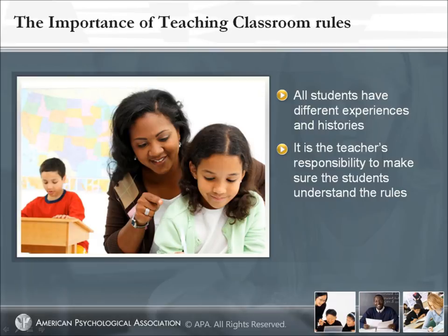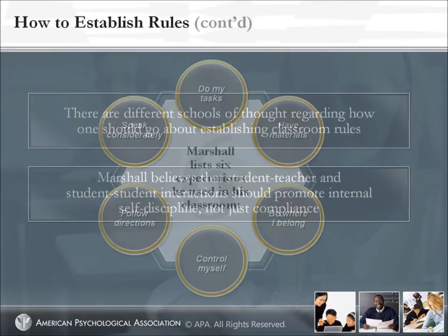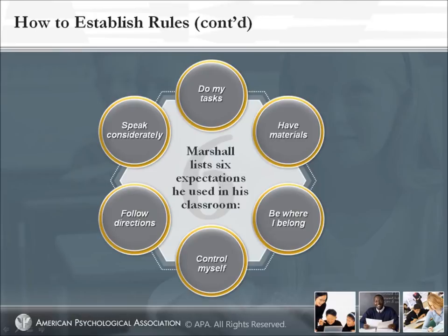How to Establish Rules. Marshall prefers to use the term 'expectations' instead of 'rules' because it has more of a positive connotation. Marshall believes that student-teacher and student-student interactions should promote internal self-discipline, not just compliance. Marshall lists six expectations he used in his classroom: 1. Do my tasks. 2. Have materials. 3. Be where I belong. 4. Control myself. 5. Follow directions. 6. Speak considerately. These are good expectations or rules because they are brief, there are not too many, and they cover many classroom situations.